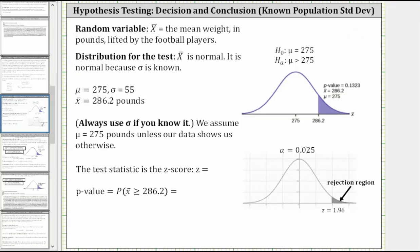To one decimal place, the sample mean x-bar equals 286.2. So now we know the population mean is 275, the population standard deviation is 55, and the sample mean x-bar is 286.2. Because we have a known population standard deviation, the test statistic is going to be a Z score. The p-value we want is equal to the probability that x-bar is greater than or equal to 286.2. Notice on the graph how the population mean is in the middle of the normal distribution and the sample mean of 286.2 is on the right. The area shaded to the right of 286.2 is equal to the p-value.